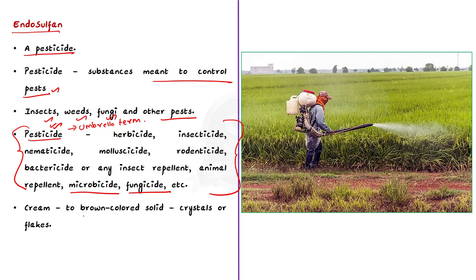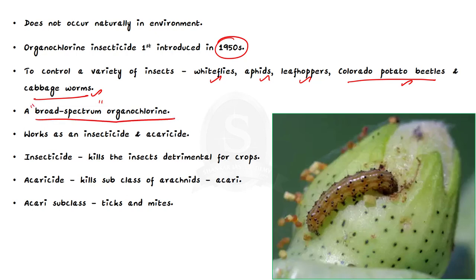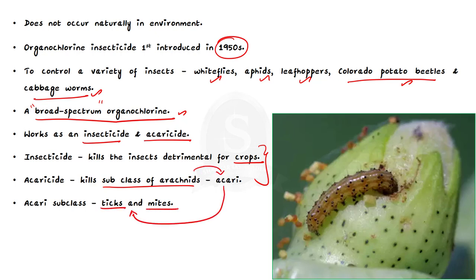Endosulfan is a brown-colored solid that may appear in the form of crystals or flakes. It has a smell like turpentine, but it does not burn. It does not occur naturally in the environment. This organochlorine insecticide was first introduced in the 1950s to control a variety of insects including whiteflies, aphids, leafhoppers, Colorado potato beetles, and cabbage worms. Endosulfan is a broad-spectrum organochlorine that works as an insecticide and acaricide. Insecticide means it kills insects detrimental to crops, and acaricide means it kills the subclass of arachnids called Acari, which includes ticks and mites.